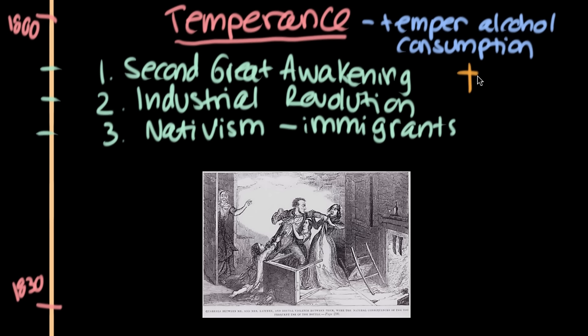Temperance can be seen as a part of the Second Great Awakening. You can kind of see the Second Great Awakening image here — this is the idea that the family was also intimately affected by people being too drunk. Here's like the father, and he's really drunk, and things are kind of going to mayhem. People were just too drunk, and this was tearing apart lots of different institutions, including the family, including education, including the workplace.